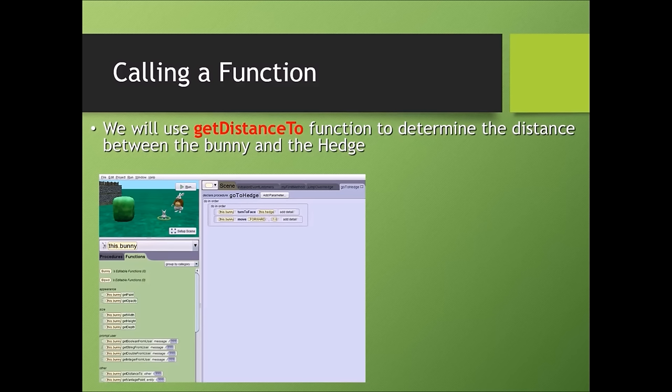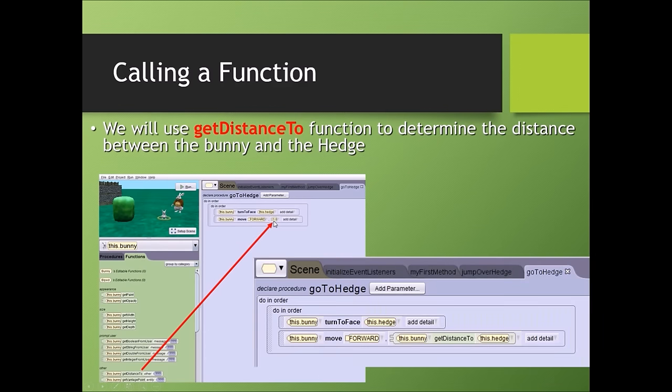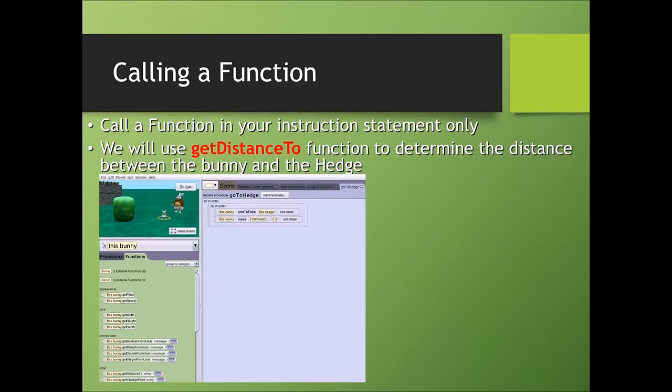We will use get distance to function to determine the distance between the bunny and the hedge. We will go to our functions tab, drag get distance to function and drop it in place of this one value. Now remember, a function is always used with a procedure. You always have to call a function in your statement. That means your function will be embedded in your procedure.